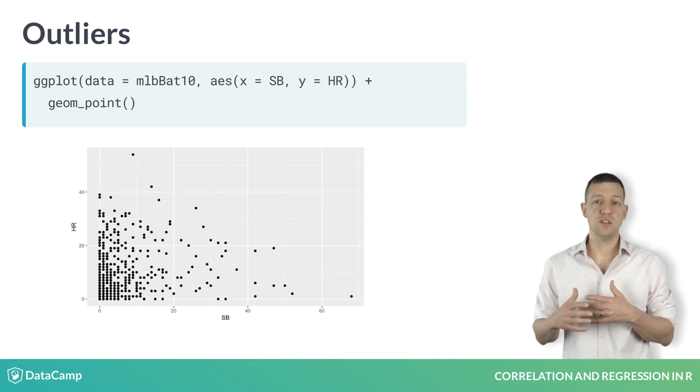Since both variables here are integer-valued, several of the observations have the same coordinates, and thus the corresponding points are plotted on top of one another. This can misrepresent the data.